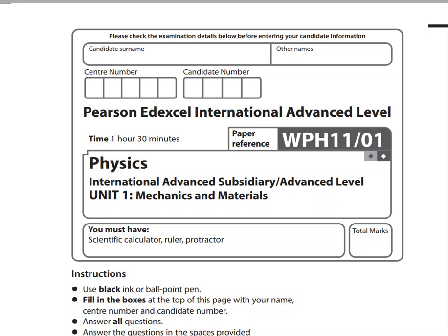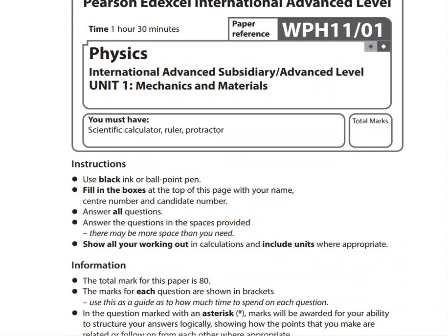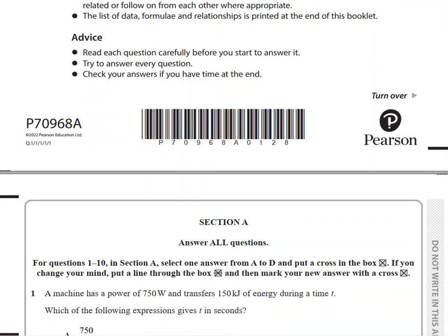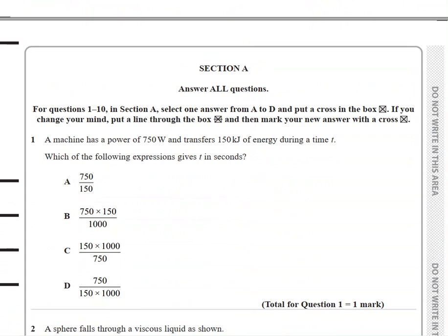Hello everyone, this is the walkthrough video solution for June 22 unit 1. The first question states a machine has a power of 750 watts and transfers 150 kilojoules of energy during a time t. Which of the following expressions gives t in seconds?